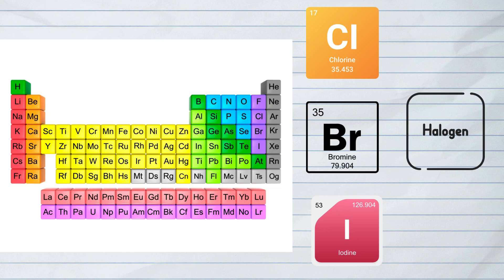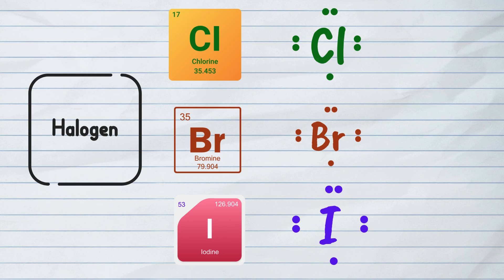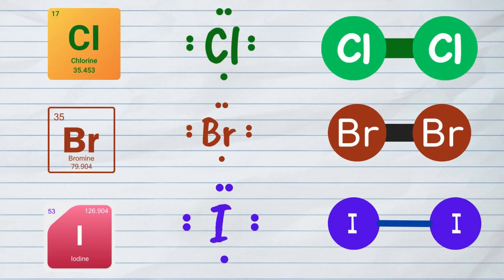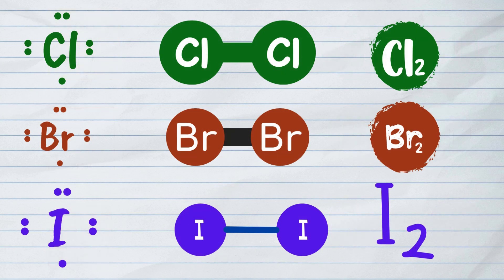Similarly, chlorine, bromine, and iodine, which are also halogens just like fluorine with seven valence electrons, will form a single covalent bond and thus form stable Cl2, Br2, and I2 molecules.